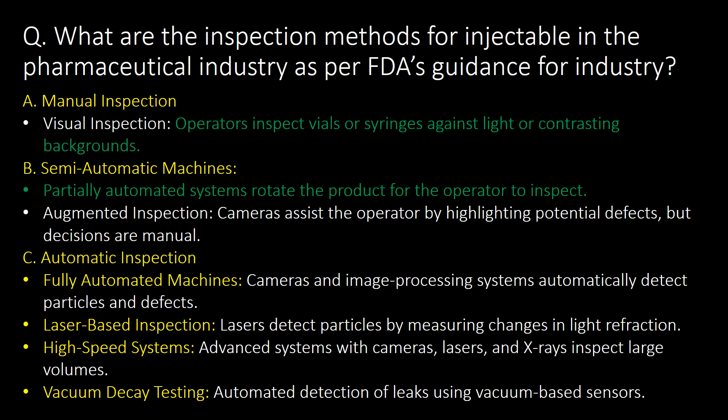What are the inspection methods for injectables in the pharmaceutical industry as per FDA guidance for industry? As per FDA guidance for industry, there are three methods for visual inspection of injectables. First is manual inspection, where operators inspect vials or syringes against light or contrasting backgrounds.